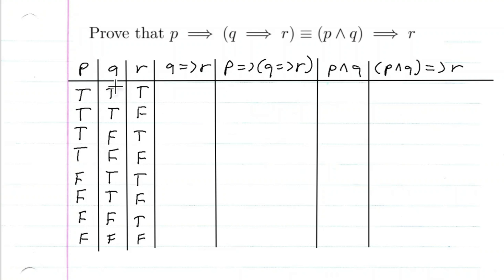The pattern gives us four truths, four falses for P; two truths, two falses, two truths, two falses for Q; and then true, false, true, false, true, false, true, false for R — covering all eight combinations.